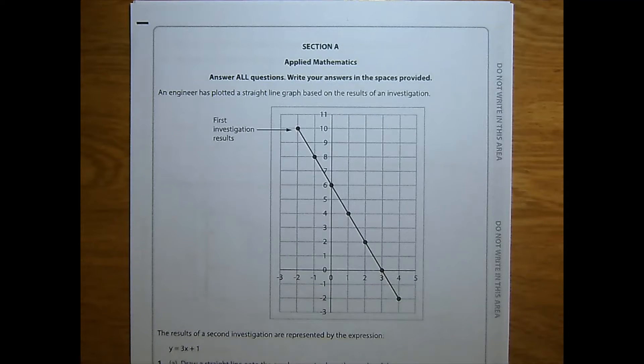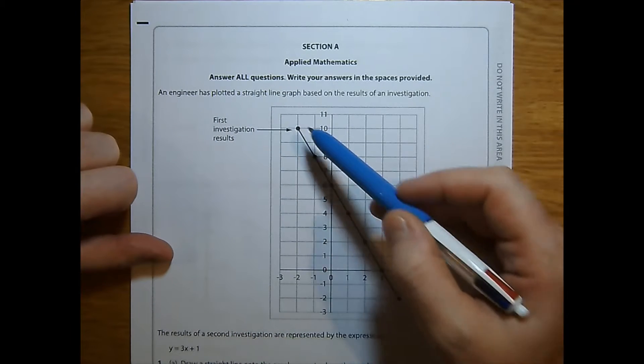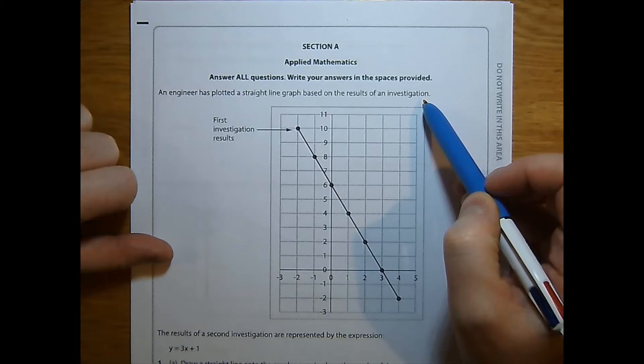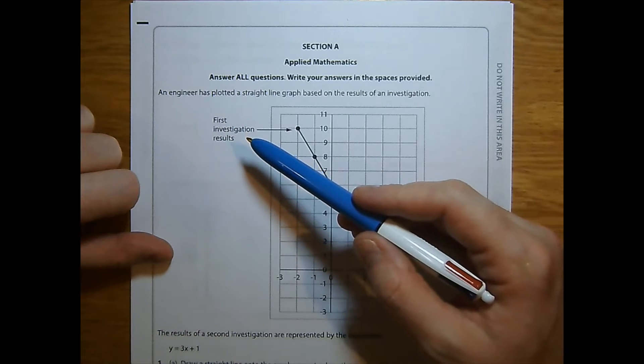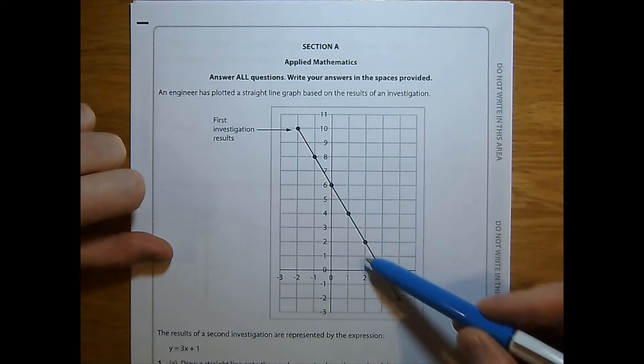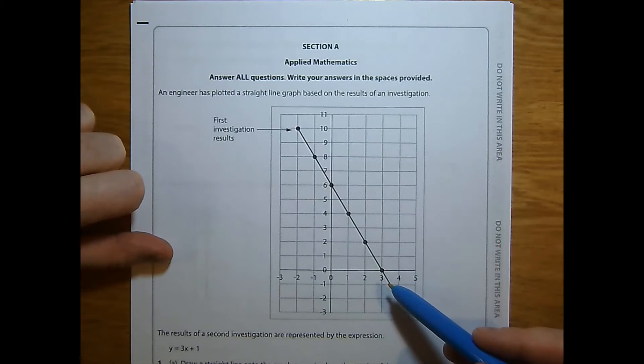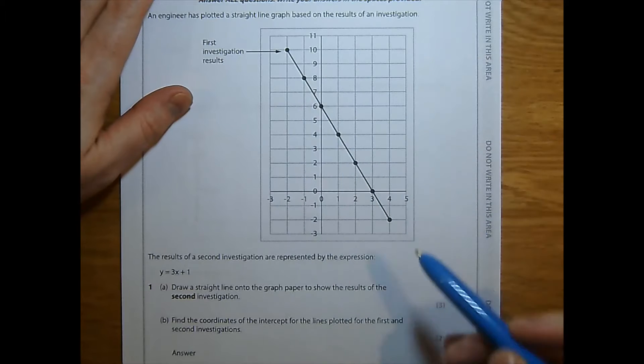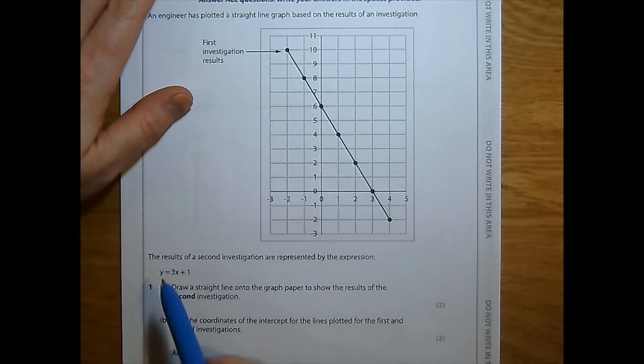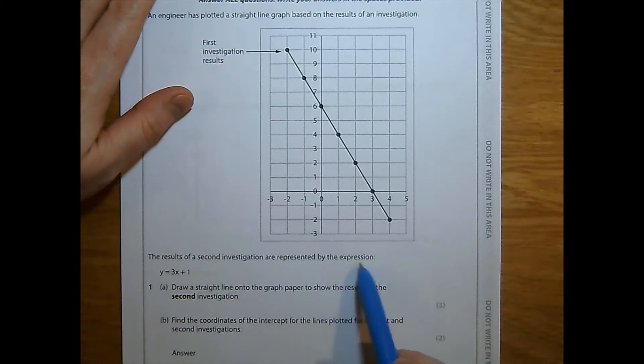January 2019, question 1. An engineer has plotted a straight line graph, here it is, based on the results of an investigation. It's labeled the first investigation, so we'll be anticipating another one second, I presume. Just on a quick glance, I've got an intercept of 6 and the gradient is negative. The results of a second investigation are represented by the expression y equals 3x plus 1.